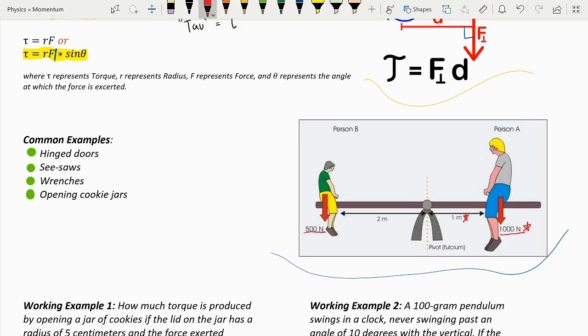So therefore, person A would need to sit 1 meter away from the pivot, and person B has to sit 2 meters away from the pivot. So if you compare the torque in both cases, both in person A and B,